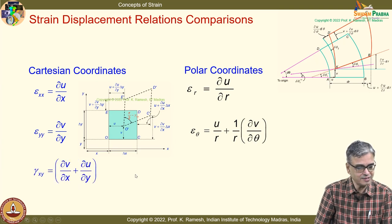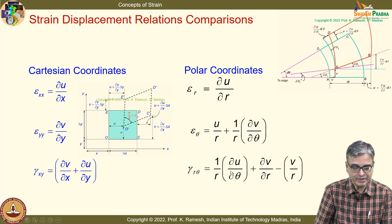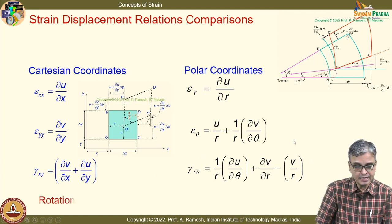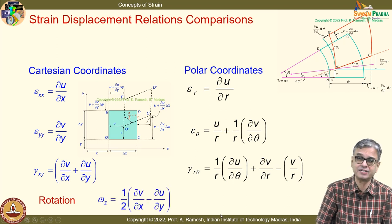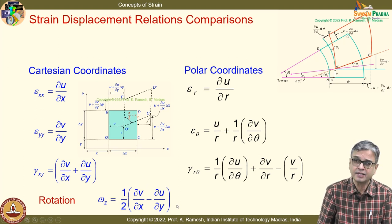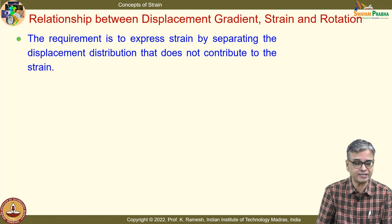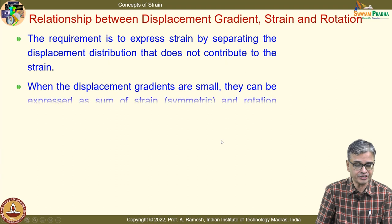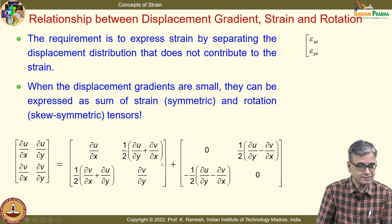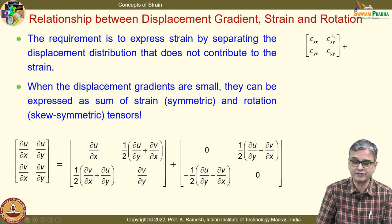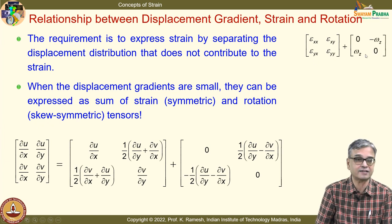Similarly, γ_xy involves opposite differentials. Whenever you have θ, you have 1/r, and you must know the third term −v/r. We also have what is known as rotation. All these come from displacement quantities — gradients of displacements used suitably. We noted the interesting relationship: when you have small deformation, the displacement gradient is the sum of a strain tensor and a rotation tensor.